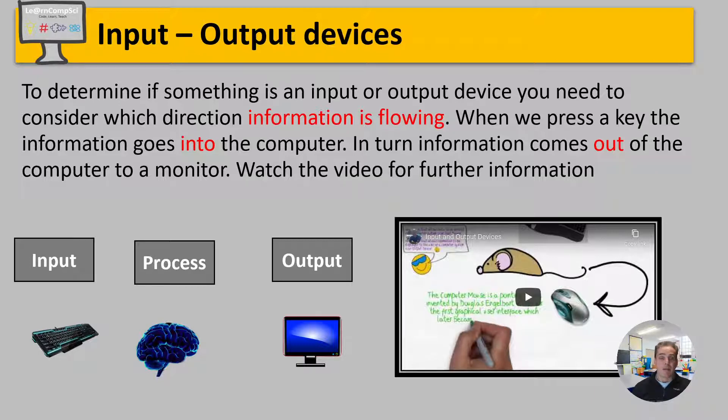So for example a keyboard okay the human presses the key and then the keyboard will send an electrical signal into the computer and the computer will then process this piece of information it will determine what action is kind of required and it might be that you're running a word processing program or something what it will do is it will change the display it will output information to your monitor that will show the letter that has perhaps been pressed on the keyboard so the keyboard is an input device the information is coming from the user into the computer whereas the monitor is an output device the information has come out of the computer to the monitor so it's all about which way the information flows okay I'm just going to watch a short video now and have a look at some other input and output devices.